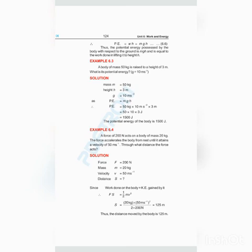The formula is work done on a body equals kinetic energy gained by it. Whatever work done you do, the body gains that much kinetic energy. So the formula for example 6.4 is fs equals half mv square. Force value is 200, you have to find out s, m value is 20, and v value is 50. When you calculate this value and divide both sides by 200, then the answer will be 125 meter. So the body will cover a distance of 125 meters when you apply a force of 200. Thank you.